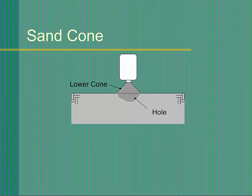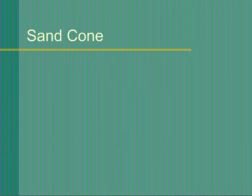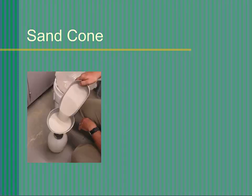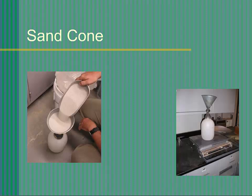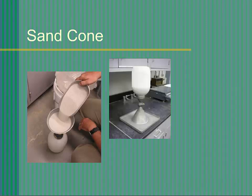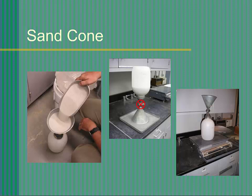We must subtract the weight of sand filling the lower cone assembly to determine the weight of the sand filling just the hole. So there are two steps in the calibration of the sand cone: first, we must determine the weight of sand filling the lower cone assembly, and second, we must determine the unit weight of the sand. To determine the weight of sand filling the lower cone assembly: fill the jar with sand, attach the cone assembly, and weigh the jar and cone assembly. Then place the base plate on a smooth surface, invert the sand cone and base plate making sure the cone fits in the rim of the base plate, open the valve, allow the sand to fill the cone, close the valve, reweigh the jar and cone assembly, and determine the weight of soil filling the cone. Repeat this test three times to obtain an average weight of sand filling the cone.